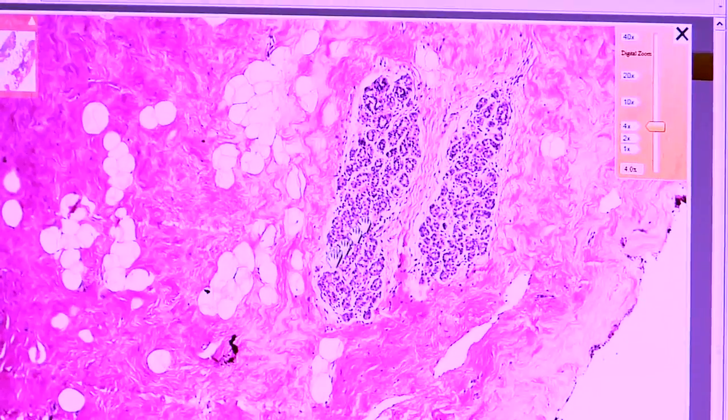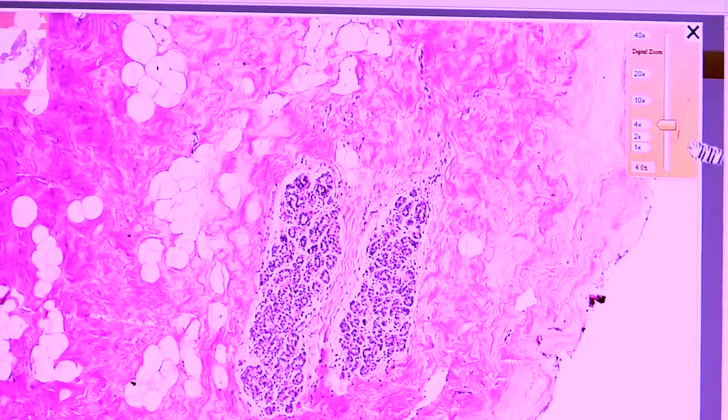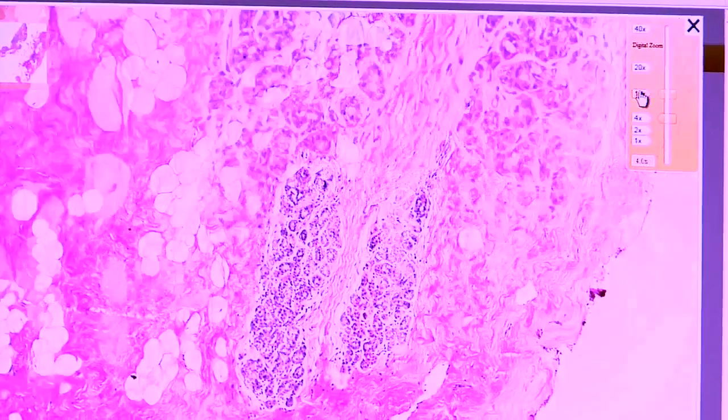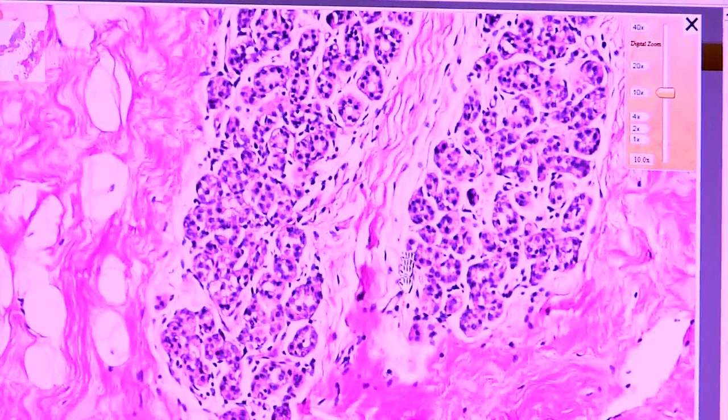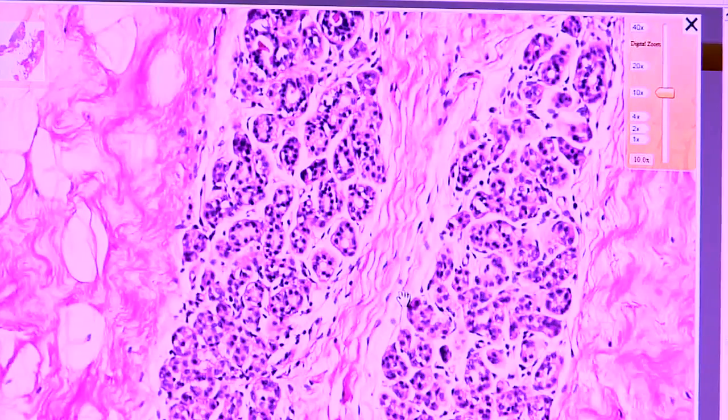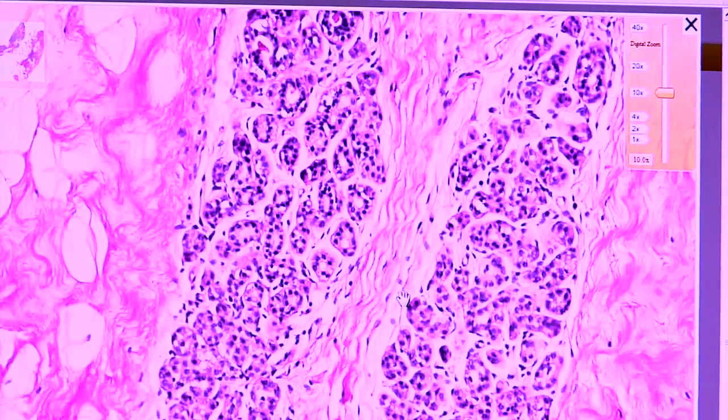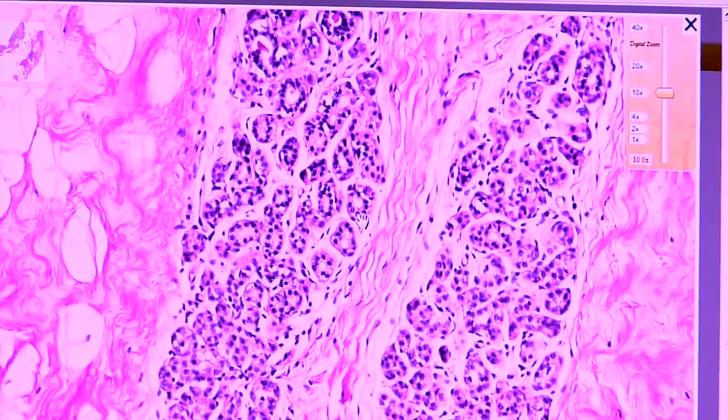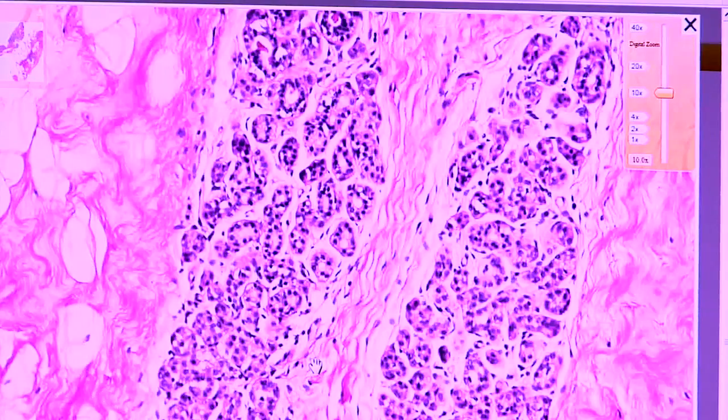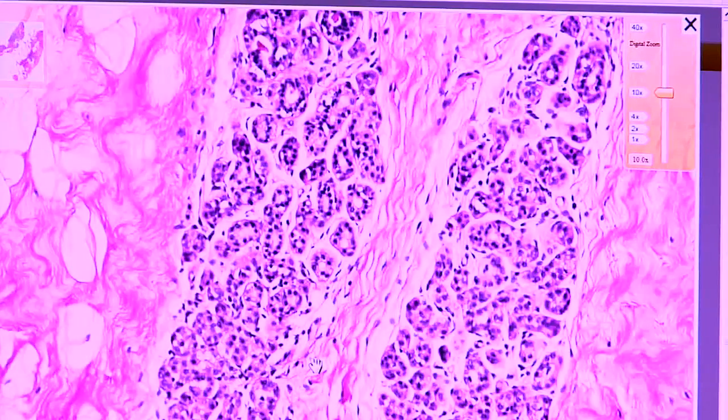When we look at this area, we can even go higher to 10X. We see, in fact, they are normal acini. They are aligned by two cell layers, a myoepithelial and an epithelial layer. They are well circumscribed and they resemble normal lobules of the breast.